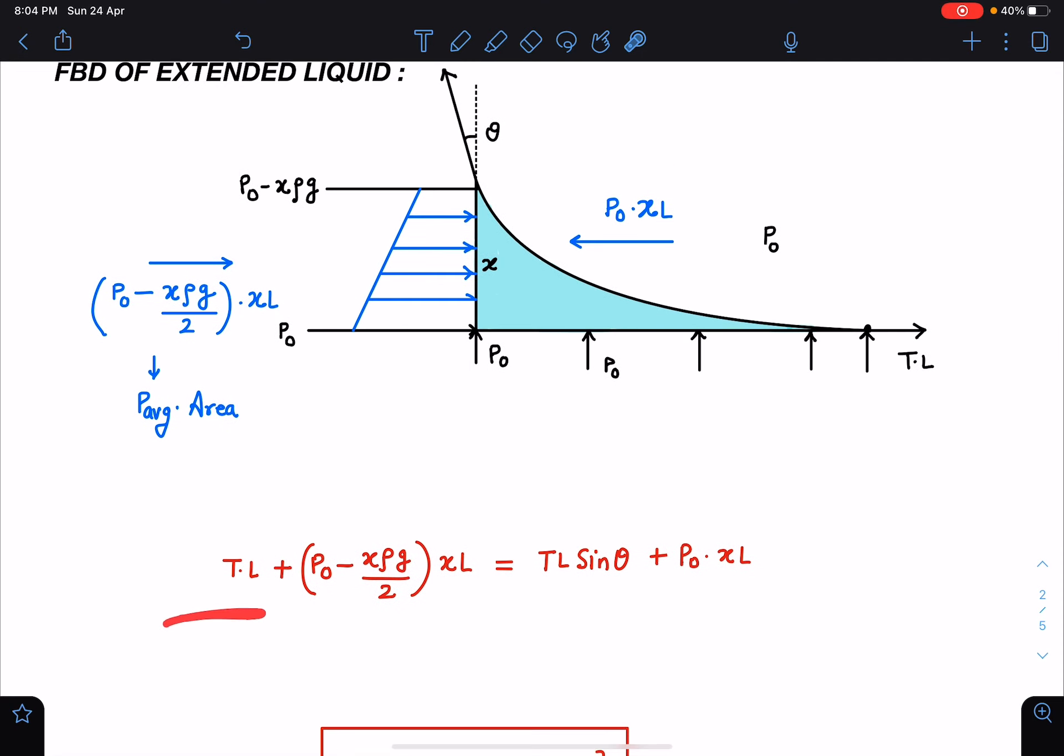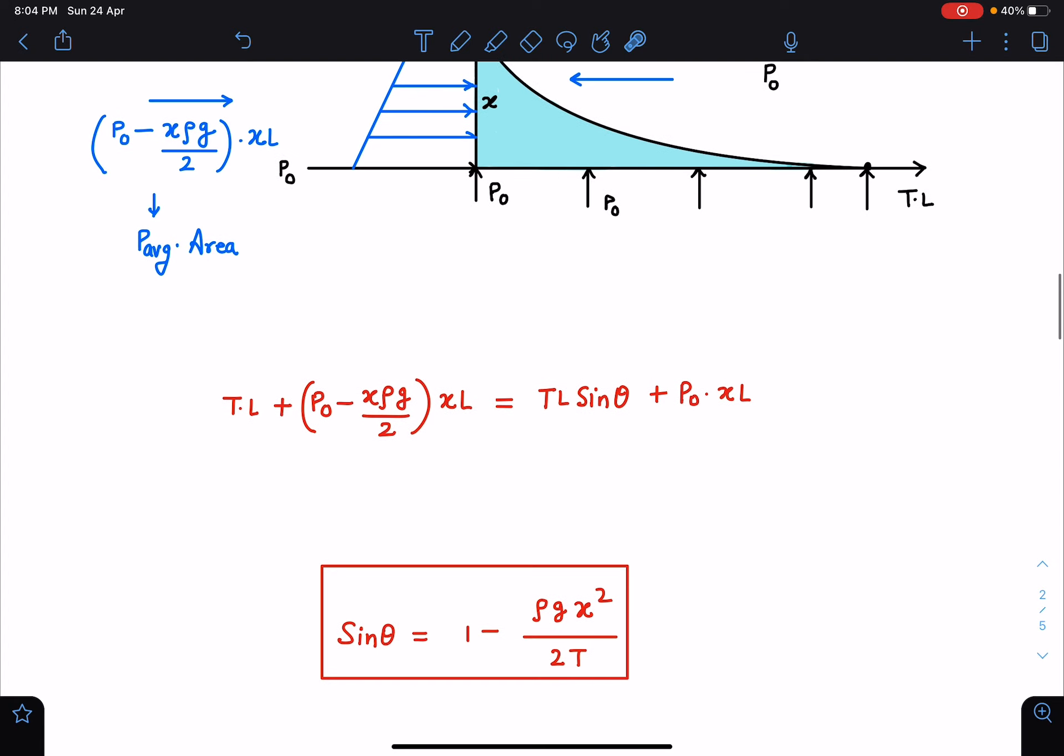So T into L plus this force is equal to TL sin θ plus P₀ XL. So this P₀ XL gets cancelled. And from here sin θ value is known to us which is 1 minus ρ g x² by 2T where T is the surface tension.